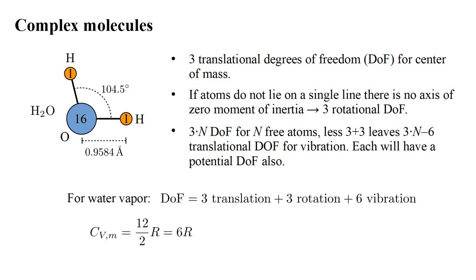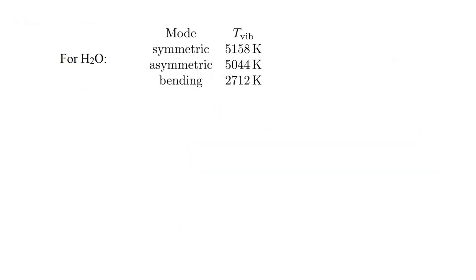So classical physics predicts a molar heat capacity of twelve over two equals six times r. However, the observed value near the boiling point of water is only about three r. But we know how to explain this as due to the six vibrational degrees of freedom being frozen out. The vibrational temperatures for the symmetric, asymmetric, and bending modes are fifty-one-fifty-eight, fifty-forty-four, and twenty-seven-twelve Kelvin.